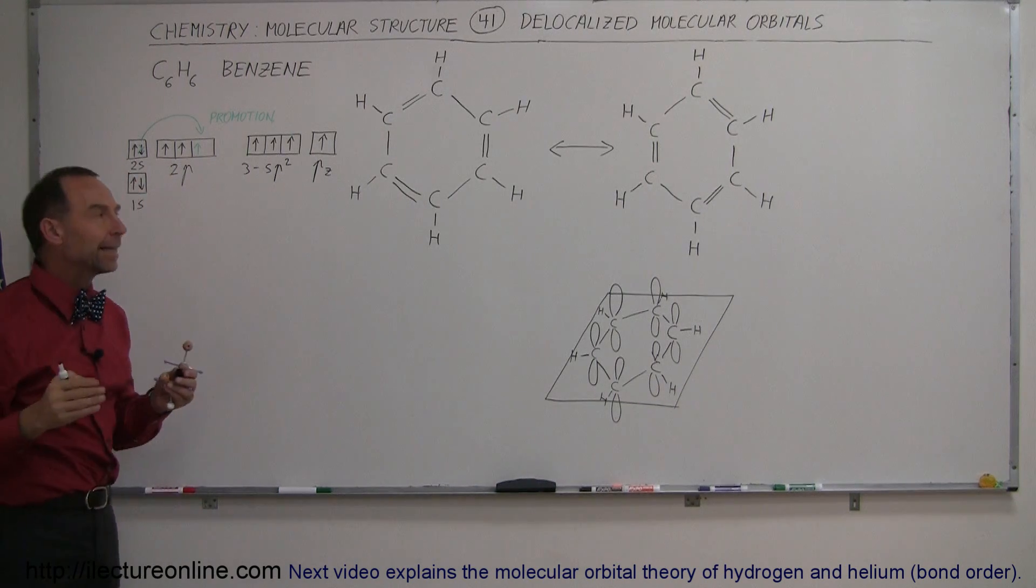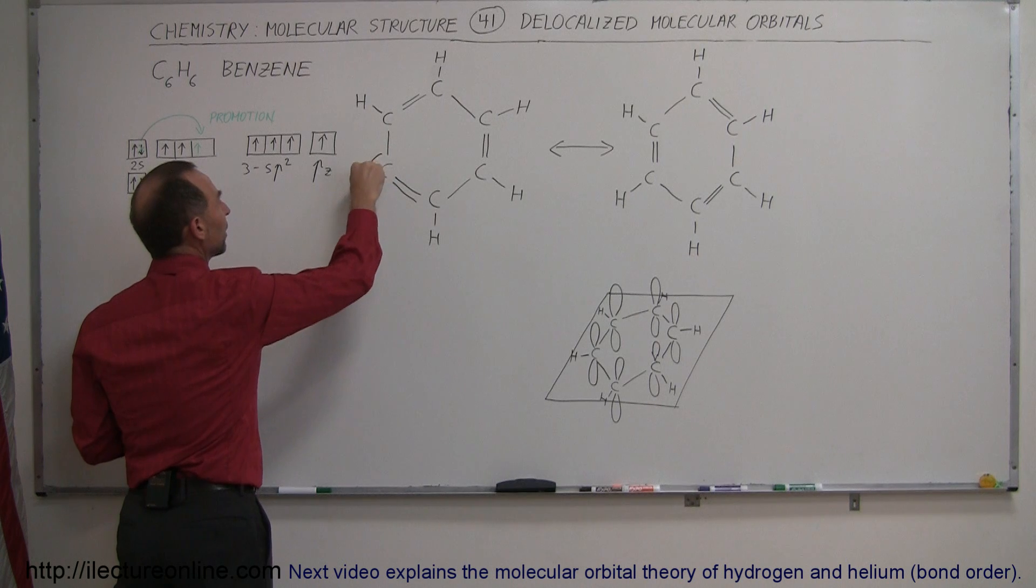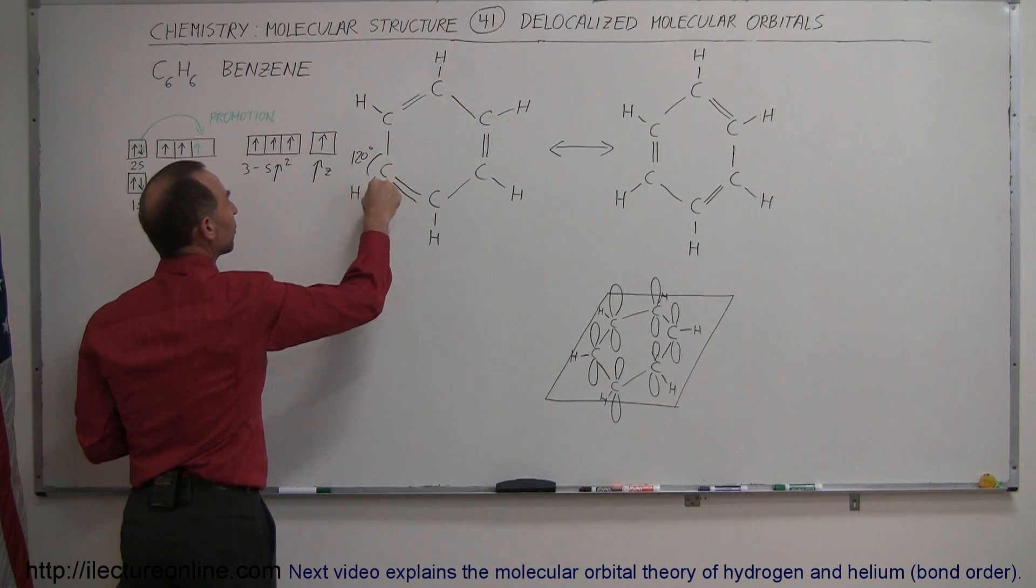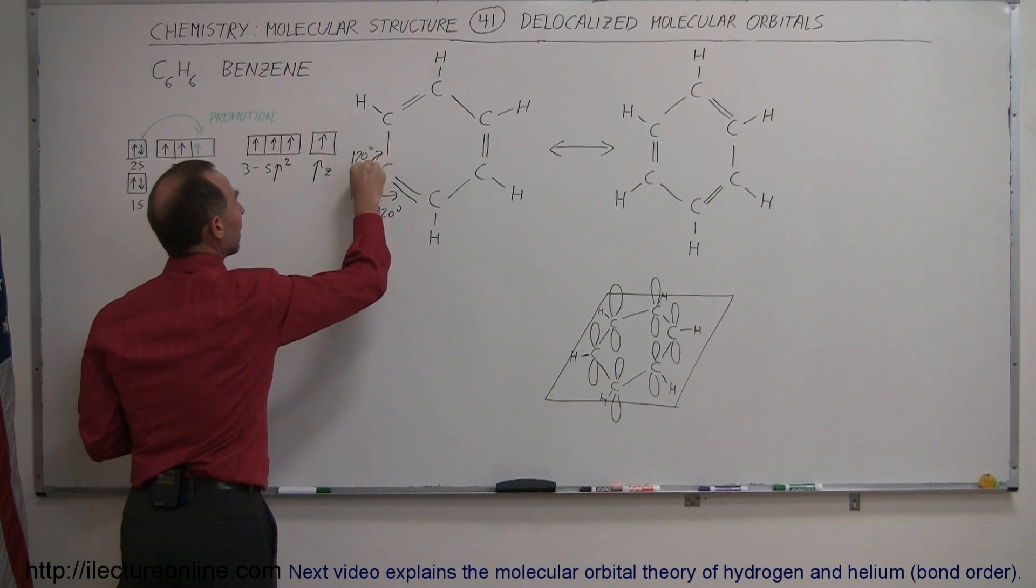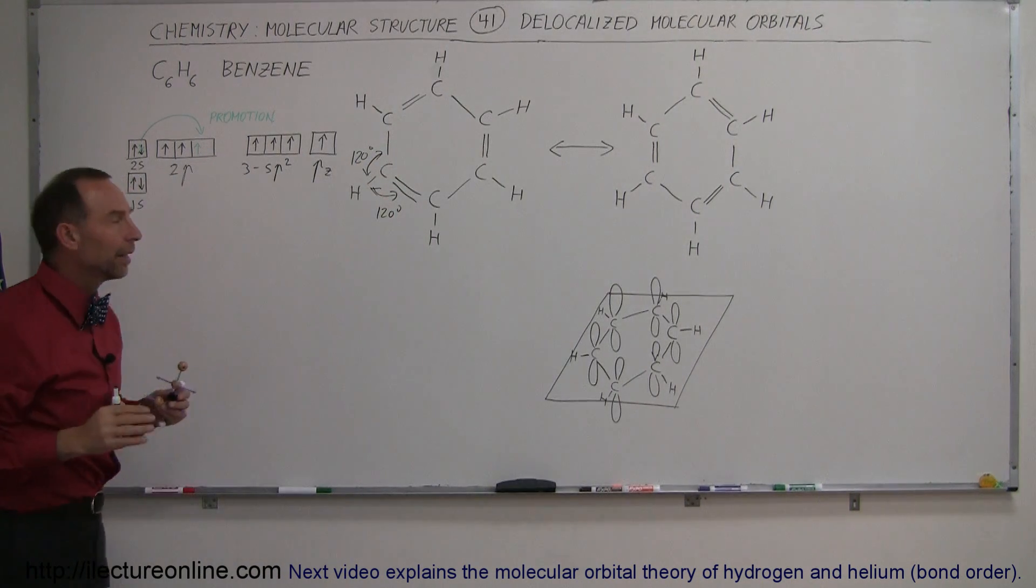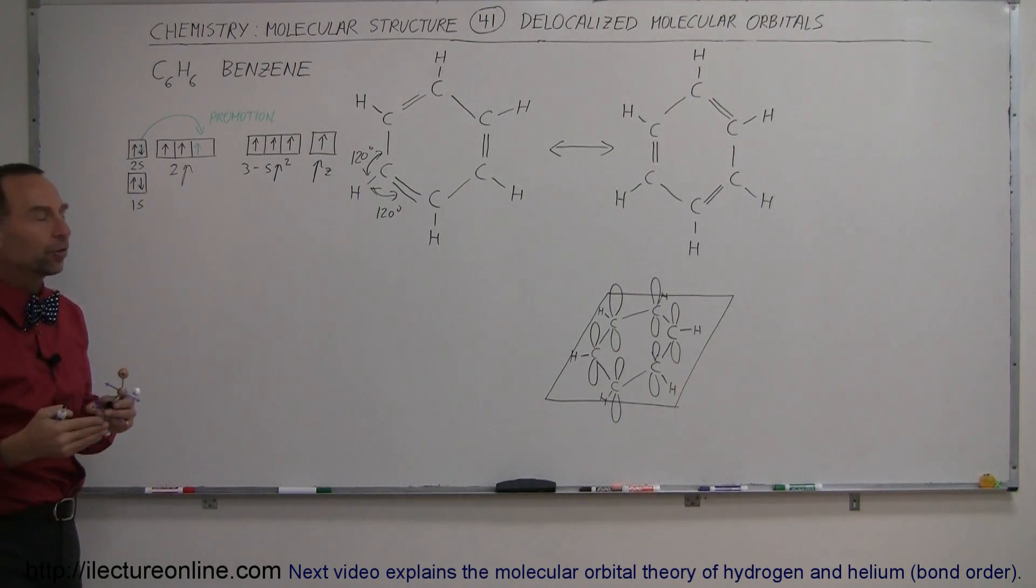But in order for it to make these bonds between the carbons and the hydrogen, and yes indeed it'll be about a 120 degree bond angle between all these, the current structure of the s orbitals and p orbitals can't accomplish that.